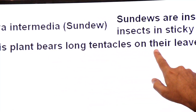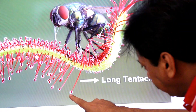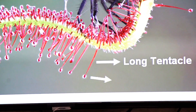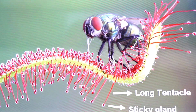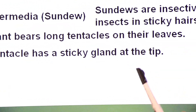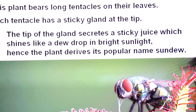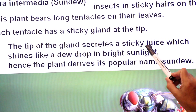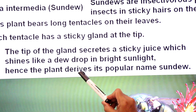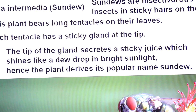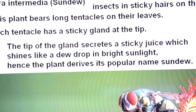This plant bears long tentacles on its leaves. There is a sticky gland at the tip of each tentacle. The glands secrete a sticky juice that shines like a dew drop in bright sunlight — hence the plant is named the sundew plant. That sticky juice gives a shining appearance when sunlight falls on it.